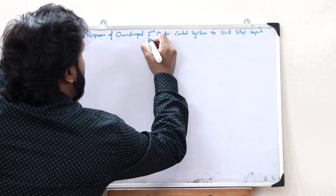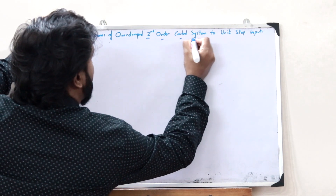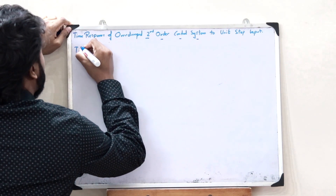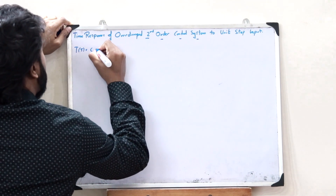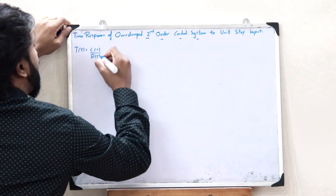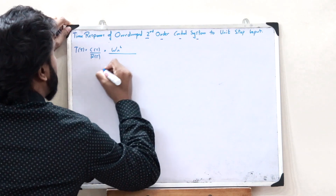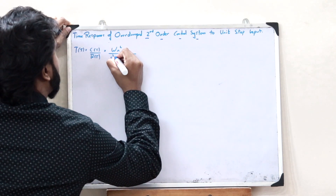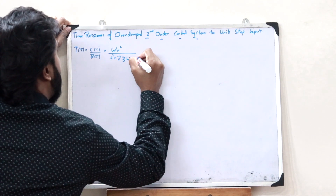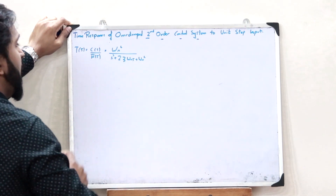We know for a fact that in the case of a second-order control system, the transfer function is given as T(S) = C(S) / R(S), which is equal to omega_N squared divided by S squared plus 2 zeta omega_N S plus omega_N squared.